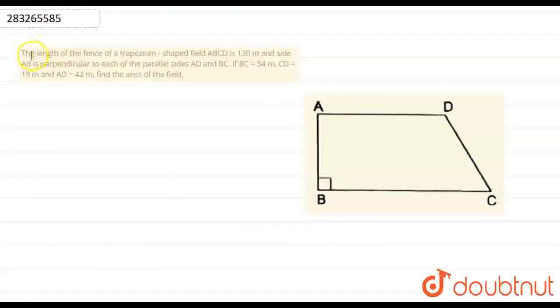Hello everyone, I am your teacher for the day. The question says: The length of the fence of a trapezium-shaped field ABCD is 130 meters, and side AB is perpendicular to each of the parallel sides AD and BC. If BC is 54 meters, CD is 19 meters, and AD is 42 meters, find the area of the field.